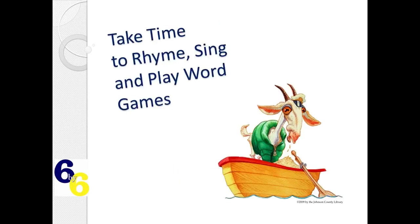The next skill is 'take time to rhyme, sing, and play word games.' These activities help children hear the smaller sounds in words, which is important when learning to sound out words. Sing and play music often — music helps kids hear the smaller sounds. Talk about words that rhyme, like naming things that rhyme with 'cat.' Also talk about alliteration — words that start with the same sound, like 'chugga-chugga-choo-choo.' Rhyming words start with different sounds but end with the same sound, helping children hear those distinct parts, while alliteration is the opposite.